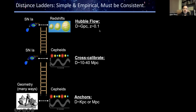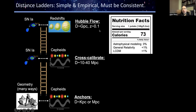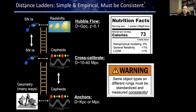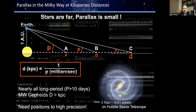There's no astrophysical modeling involved — this is purely empirical, with virtually no general relativity or Lambda CDM. However, it's critical to measure the objects across rungs in a consistent manner. We spend a lot of effort in this project to do just that.